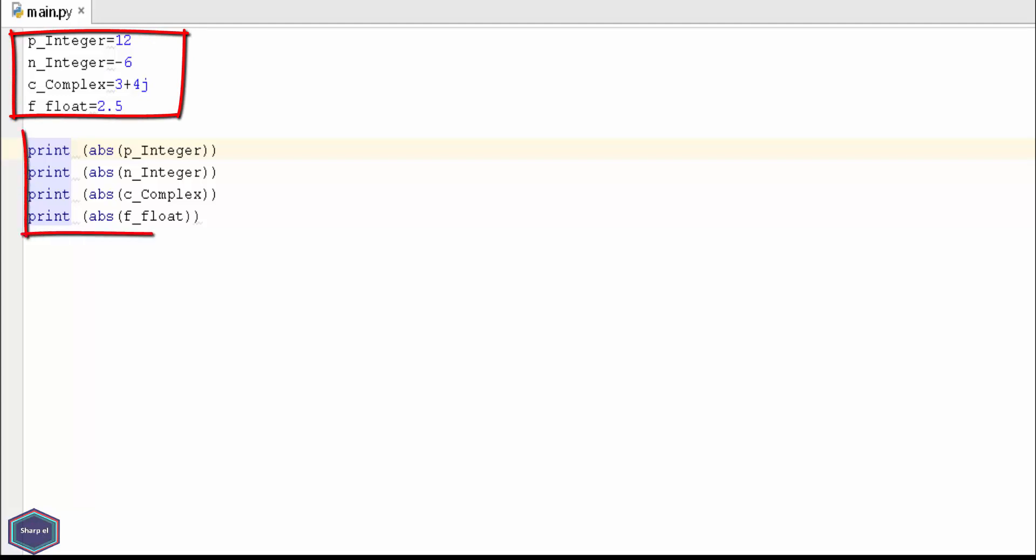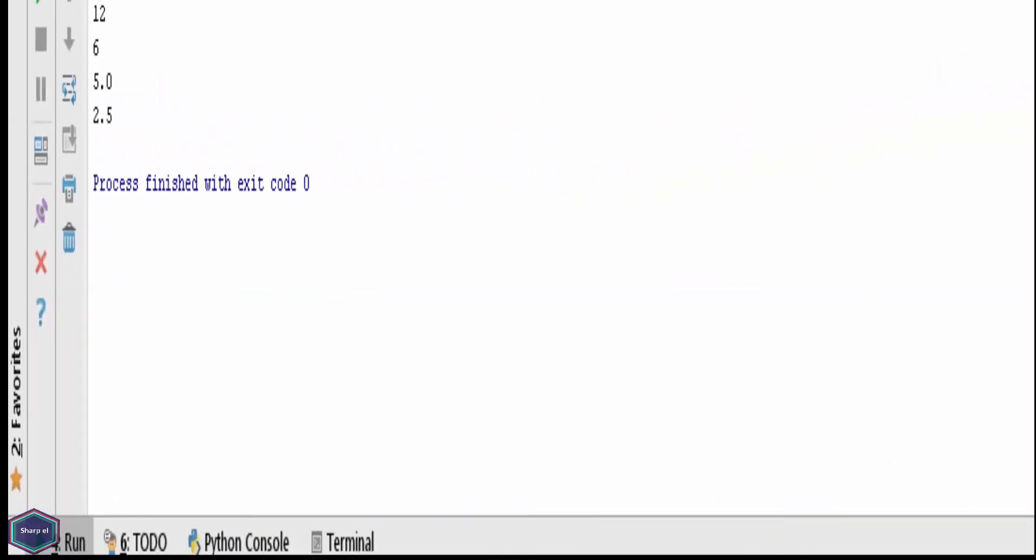Now I am calling the absolute value function in my print statement. Let's see the output window of my PyCharm. As you can see, absolute value function always returns a positive value or a magnitude if it is a complex number.